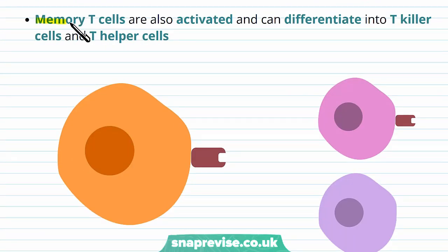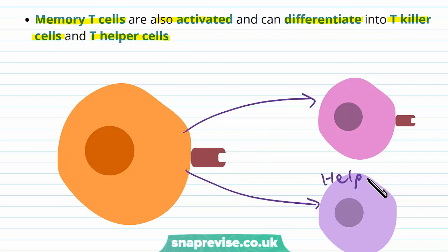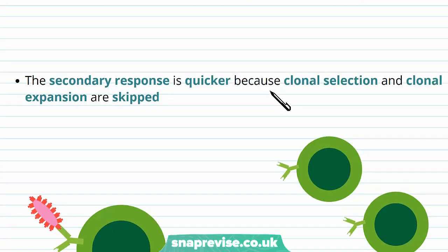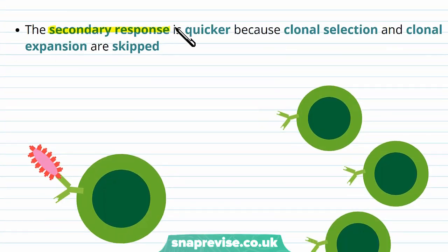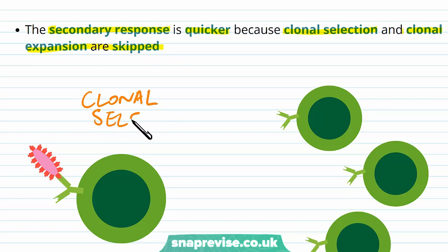We also have memory T cells, which get activated when they see the pathogen again, and they can differentiate into T killer cells and T helper cells. T helper cells help the plasma cells to differentiate, and the killer cells help to kill any cells which have infections in them. This secondary response is a lot quicker because the clonal selection and clonal expansion don't need to happen. We no longer need to find the correct B lymphocyte with the right shape, because the memory cells already know the correct shape.